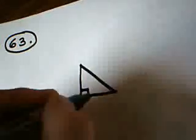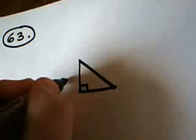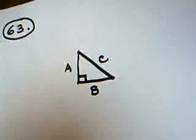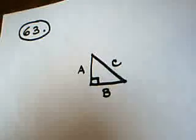Traditionally, the legs are given lengths A and B, and the hypotenuse is given length C. You can use any letters you want to, but that's pretty much tradition.